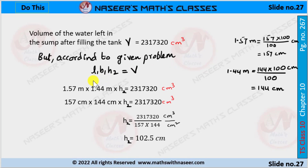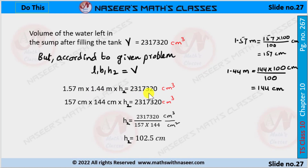According to the problem, the water left in the sump equals L1 × B1 × H2 = V. We substitute L1, B1, and V values to find H2, the height of the water left in the sump: 1.57 meters × 1.44 meters × H2 = 2,317,320 cubic centimeters. So we convert meters into centimeters.